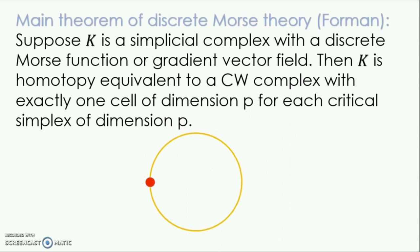This leads to the main theorem of discrete Morse theory, which is also due to Robin Forman. If K is a simplicial complex with a discrete Morse function or gradient vector field on it, then K is homotopy equivalent to a CW complex with exactly one cell of dimension p for each critical simplex of dimension p.